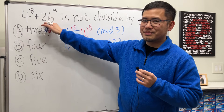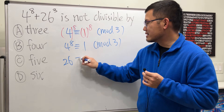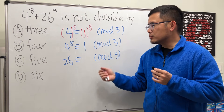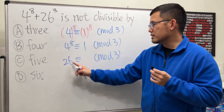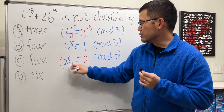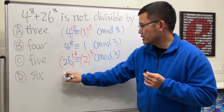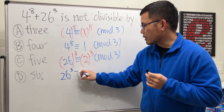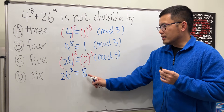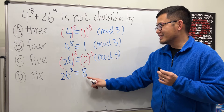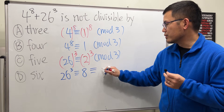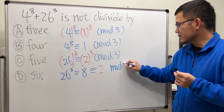Now we work on 26. What is 26 congruent to mod 3? 26 divided by 3 is 8 remainder 2, so 26 is congruent to 2 mod 3. We raise both sides to the 3rd power: 26 to the 3rd power is congruent to 2 to the 3rd power, which is 8. And 8 divided by 3 is 2 with remainder 2, so this is congruent to 2 mod 3.